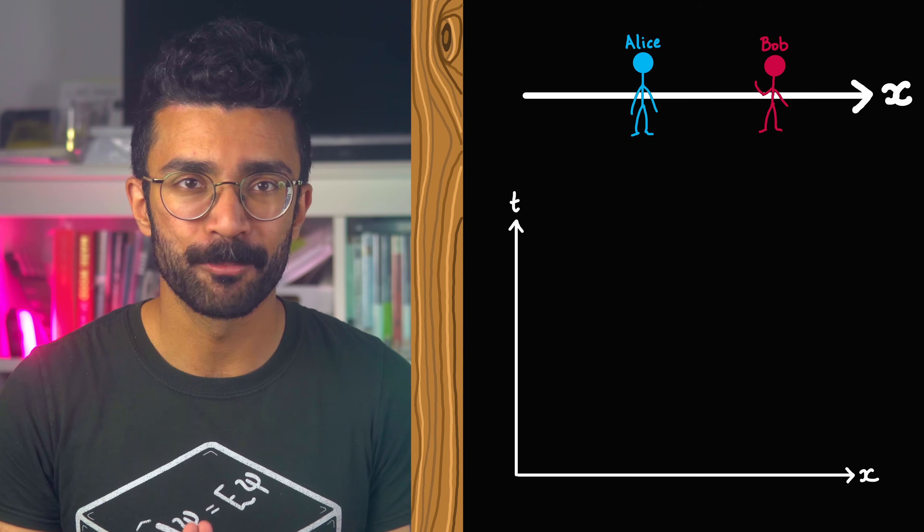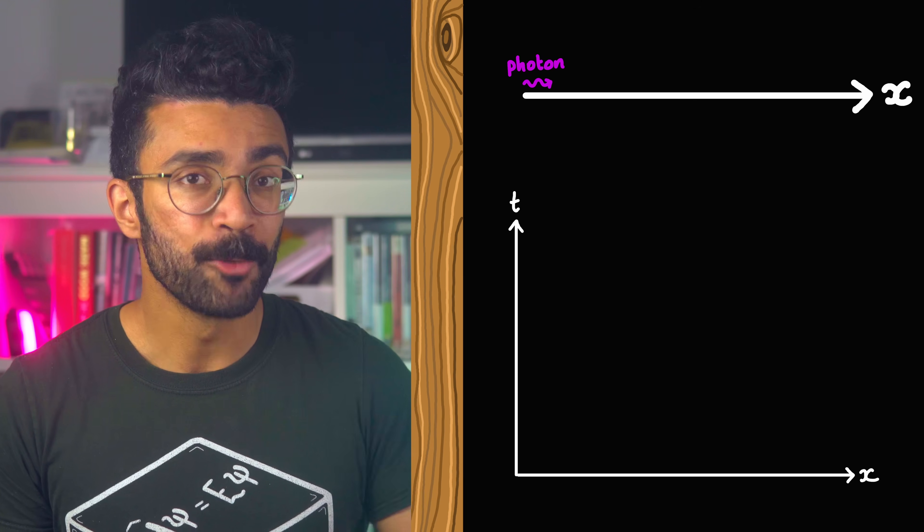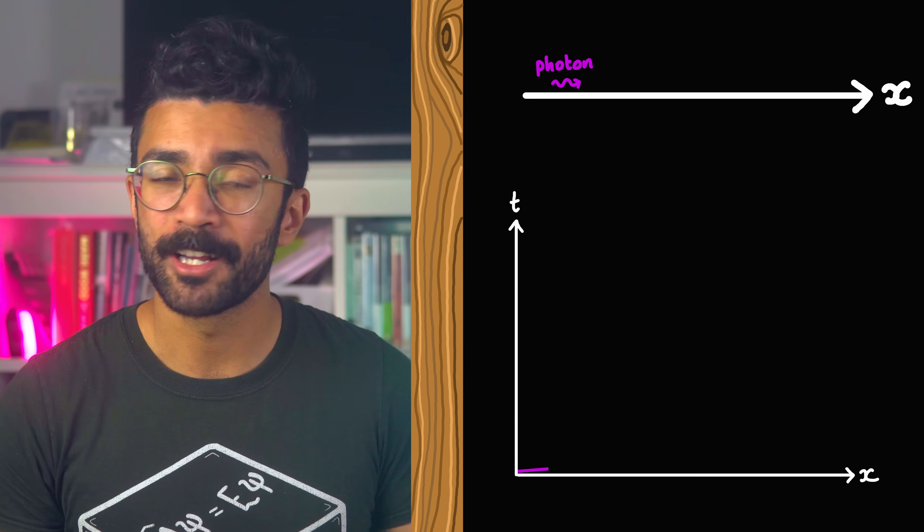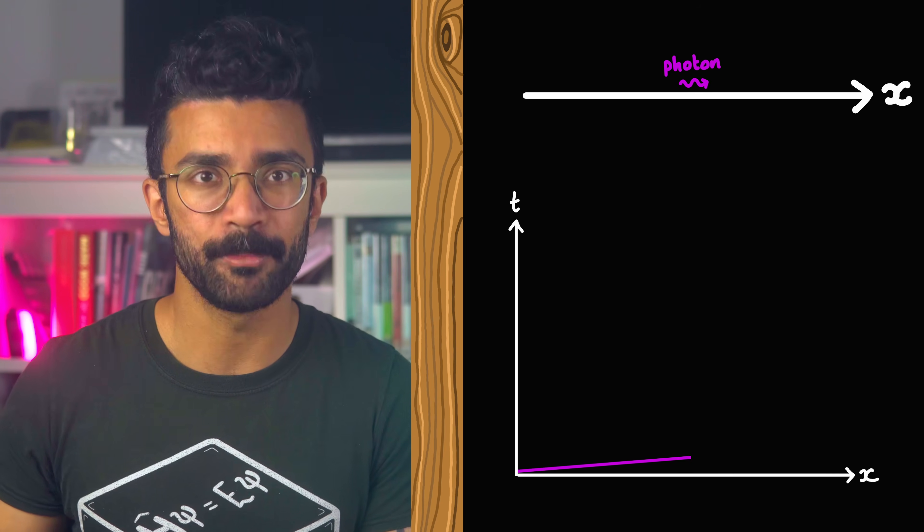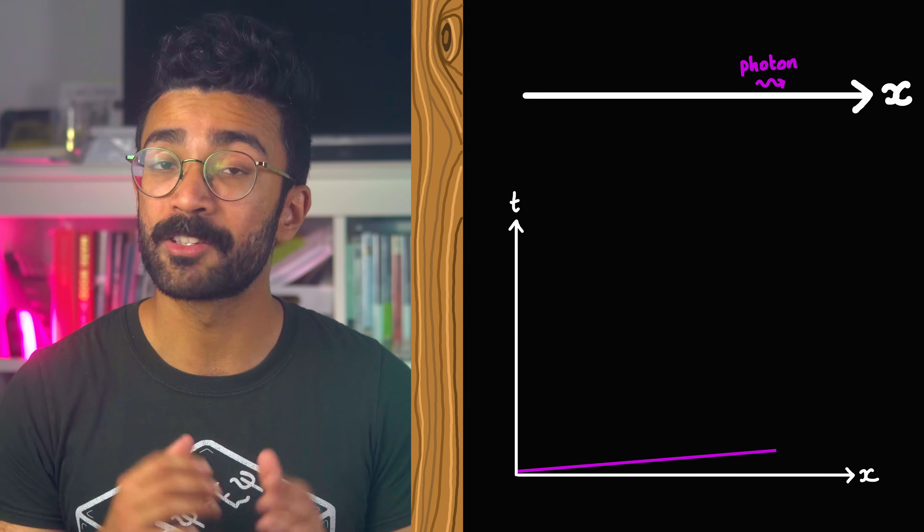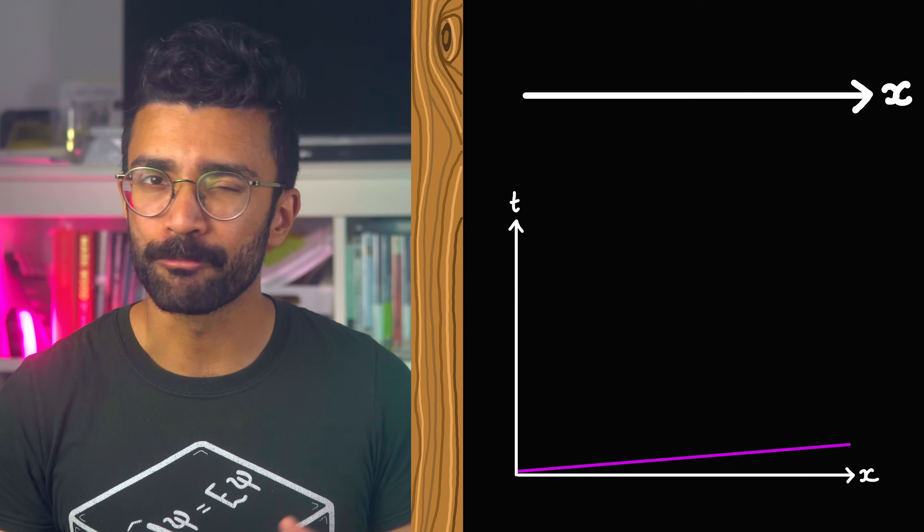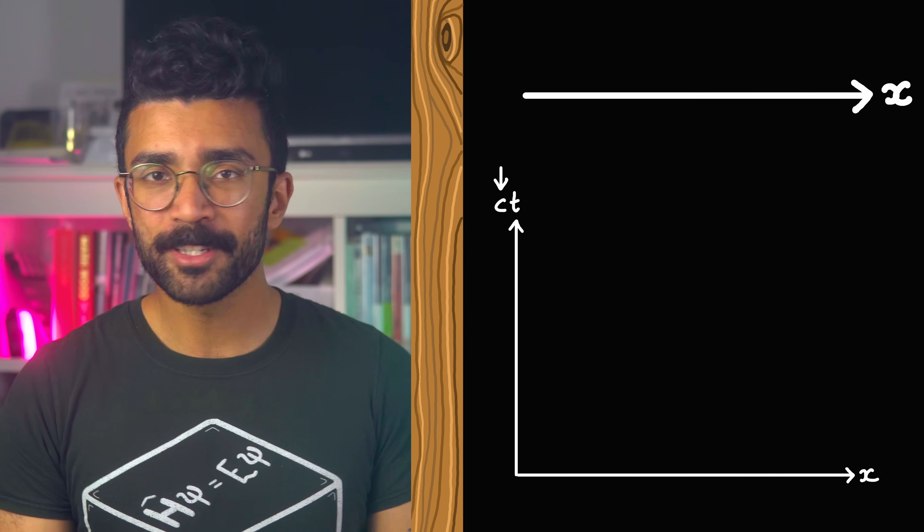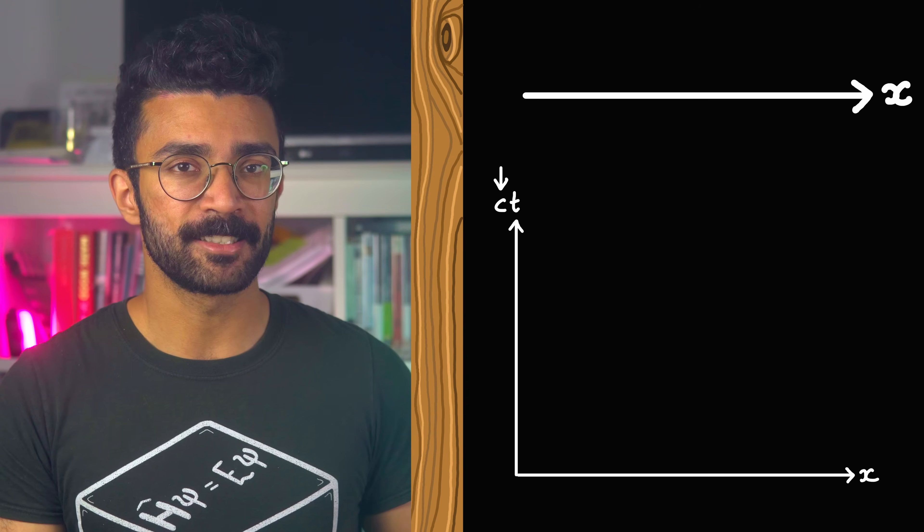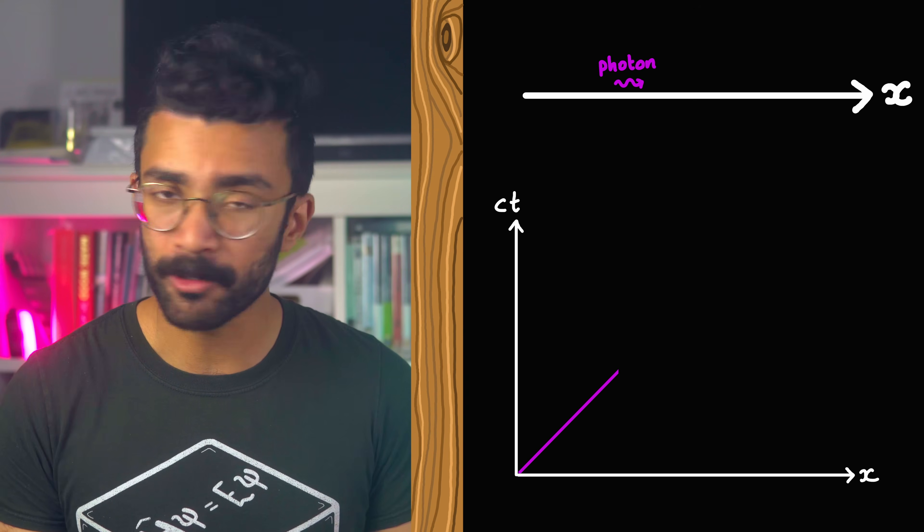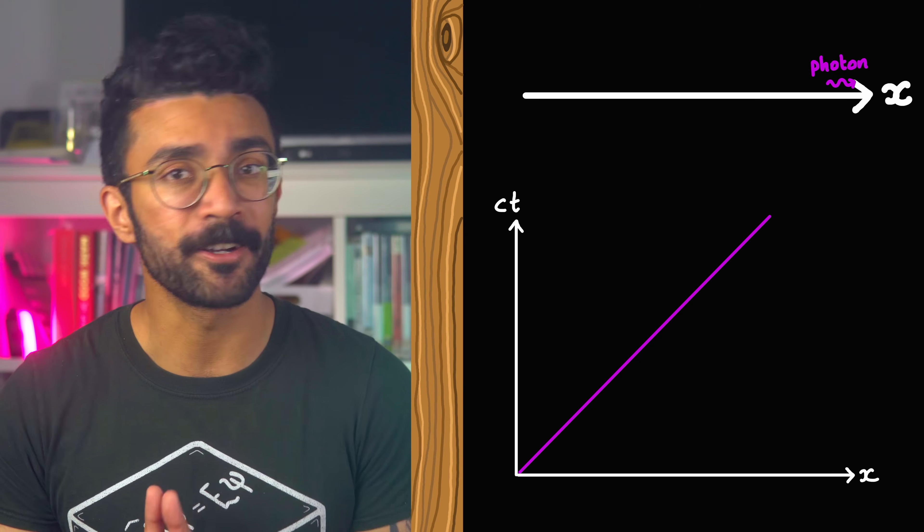For example, let's think about how we would plot the motion of a photon of light emitted from the origin at t equals zero, moving along the x direction. We know that light moves at around 300 million meters per second. So in one second it will have moved 300 million meters, in two seconds 600 million meters, and so on. This is a really shallow line on our graph. So to see it more clearly, let's rescale our axes. We do this by multiplying the time axis with the speed of light c.